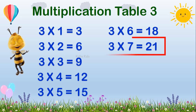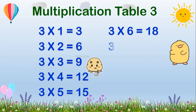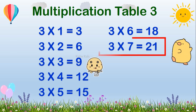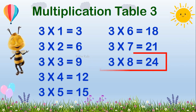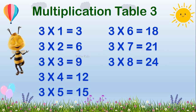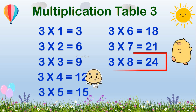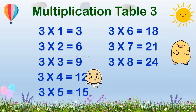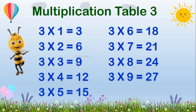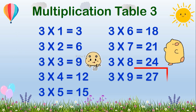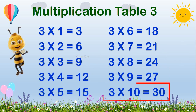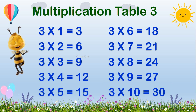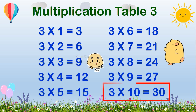Three, seven's are twenty-one. Three, seven's are twenty-one. Three, eight's are twenty-four. Three, eight's are twenty-four. Three, nine's are twenty-seven. Three, nine's are twenty-seven. Three, ten's are thirty. Three, ten's are thirty.